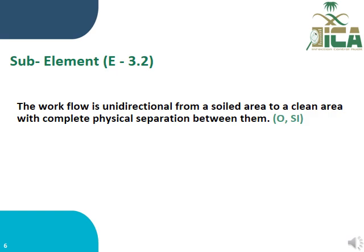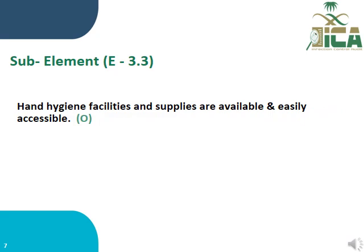A3.2: The workflow is unidirectional from the soiled area to the clean area, with complete physical separation between them, and is evaluated by observation and interview. E3.3: Hand hygiene facilities and supplies are available and easily accessible, and is evaluated by observation.